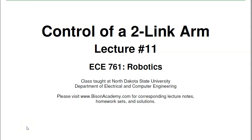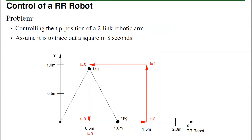Welcome to 761 Robotics, lecture number 11: Control of a Two-Link Arm. In this lecture, I want to look at how do you come up with the joint torques to force the two-link arm to follow a certain path. The path that I want is to trace out a square.